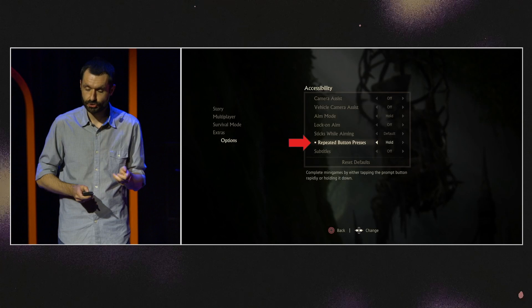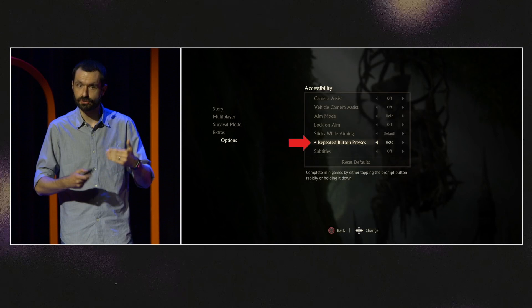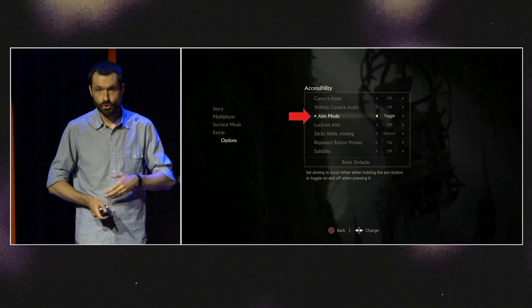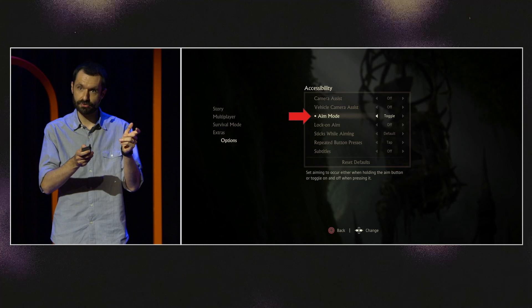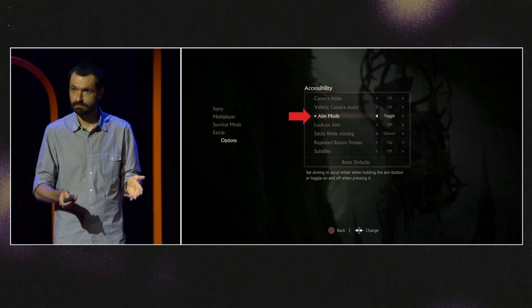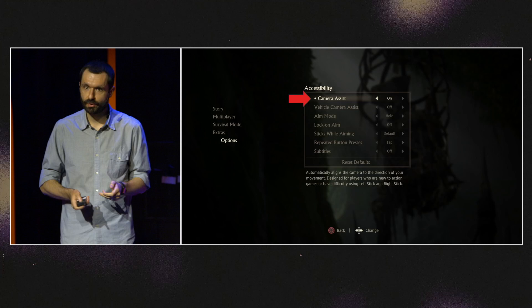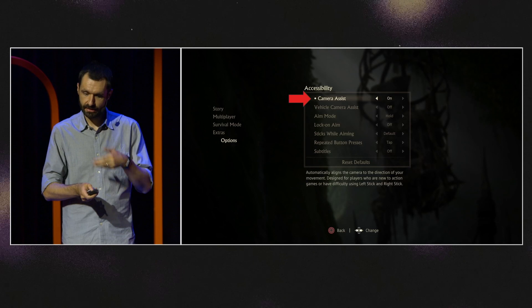There's an option to turn repeated button presses into a button hold — that removes the barrier Josh encountered, giving players a different way to get through that sequence. There's also an option where rather than holding down a button to aim, you can press once to start aiming and press again to stop, reducing fatigue for players who don't want to hold down a button.